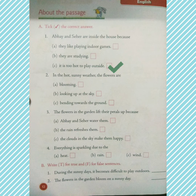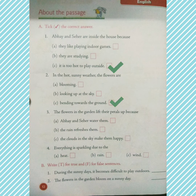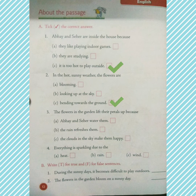Second sentence: In the hot sunny weather, the flowers are — blooming, looking up at the sky, or bending down towards the ground. The answer is: the flowers are bending towards the ground, which also means wilting. Now the third sentence: The flowers in the garden lift their petals up because — Abhay and Seher water them, the rain refreshes them, or the clouds in the sky make them happy. The answer is: the rain refreshes them.